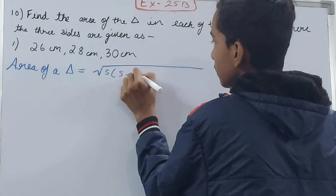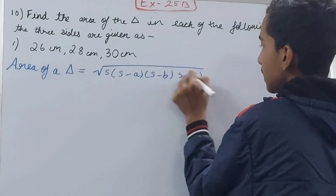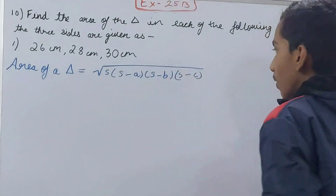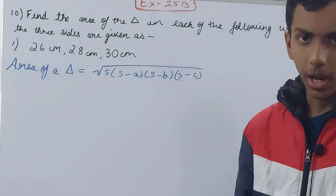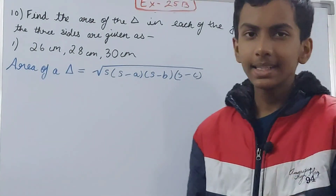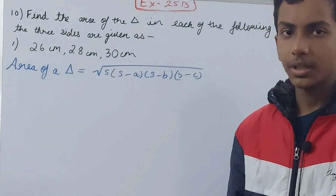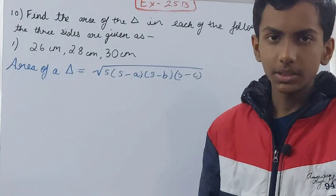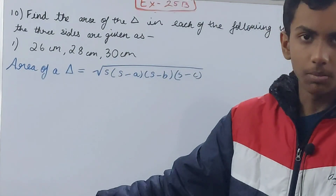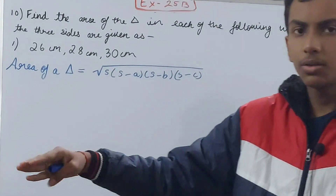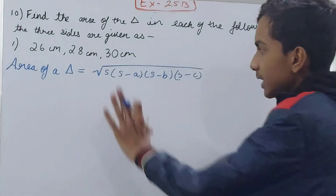...s × (s − a) × (s − b) × (s − c). Now, what is this? This formula is used to find the area of a triangle, and it is only used when you have all three sides of the triangle given. Here all three sides are given, so we can use this formula. When the height is given, then you can use ½ × base × height.